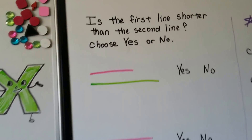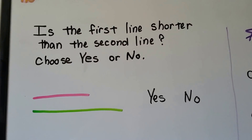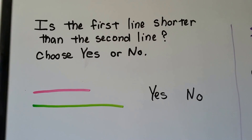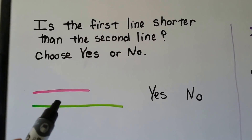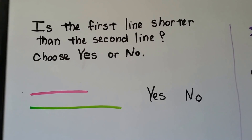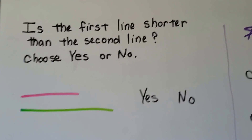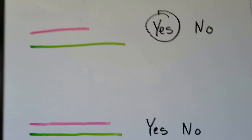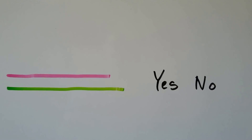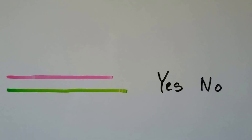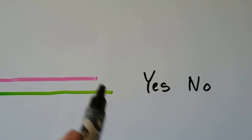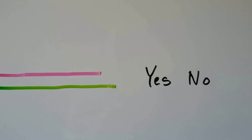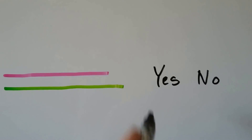Is the first line shorter than the second line? Choose yes or no. Is this pink line shorter than the green line? It doesn't stick out as far as the green one, so yes, it is shorter. Is this pink one shorter than the green one? They're almost the same length, but the pink one is still shorter — it doesn't stick out as far. So yes, the first line is shorter.